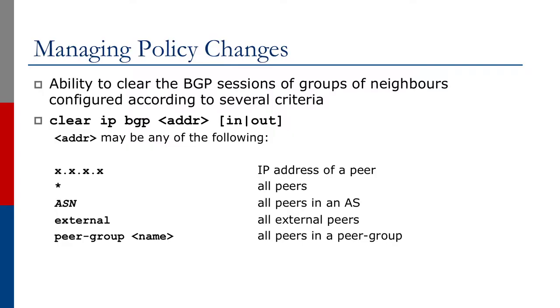For Cisco IOS you can use 'clear ip bgp' followed by an address and then 'in' or 'out'. The address can be an IPv4 or IPv6 address of the peer, a star meaning all peers, an ASN meaning all peers in that AS, 'external' meaning all external peers, or a peer group name meaning all peers in that group. Similarly, other vendors will have different ways to group which peers you want to clear. In any situation, make sure you remember to specify the direction at the end.